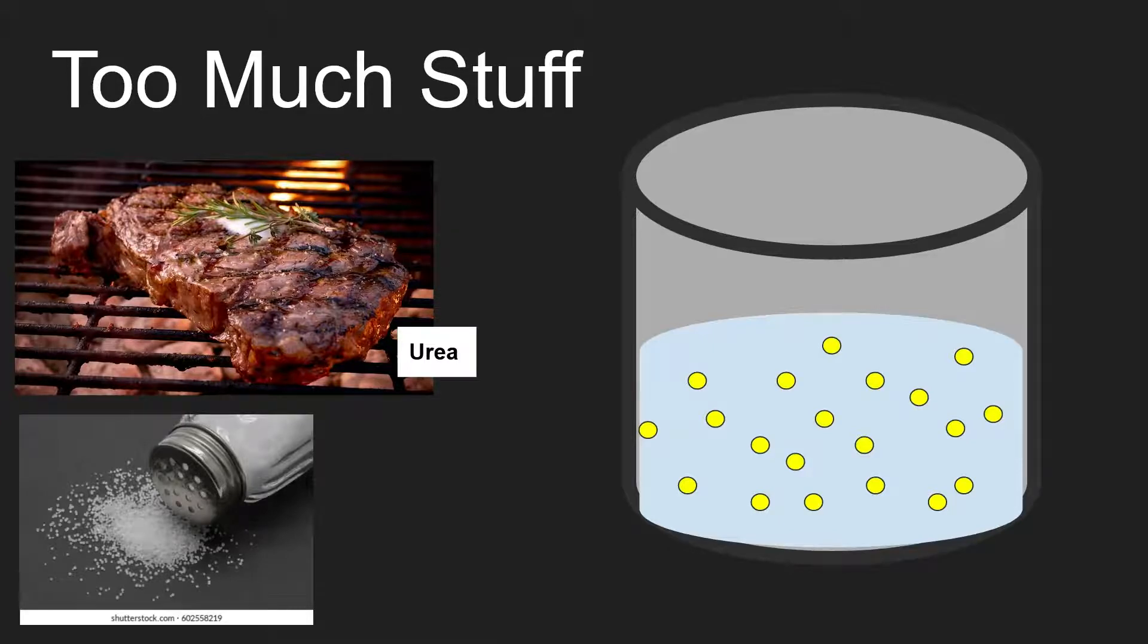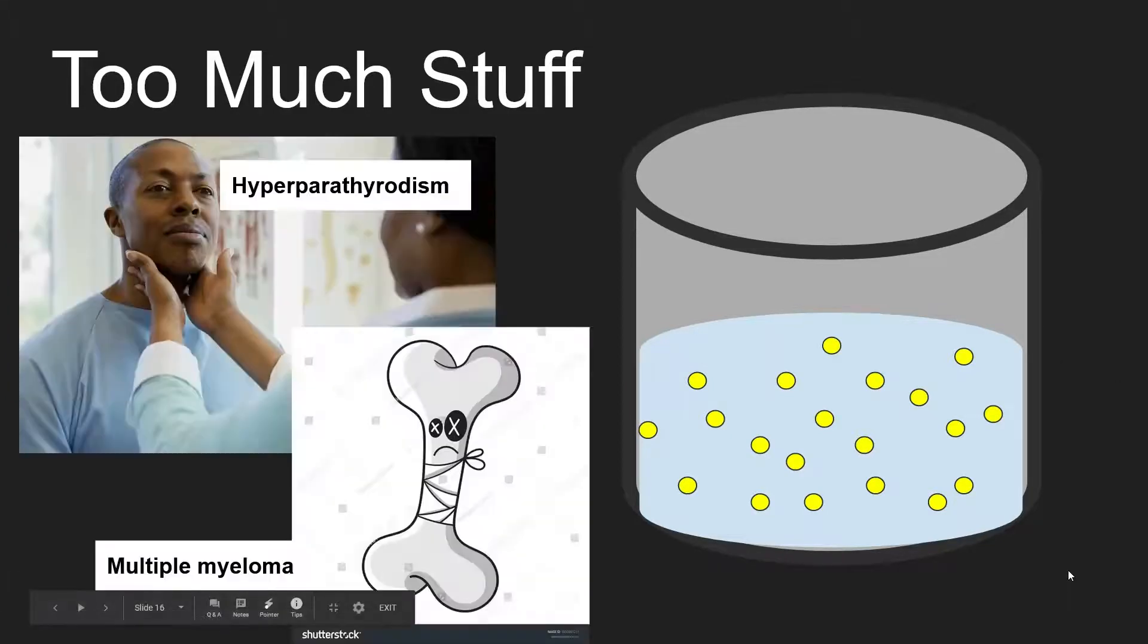Like urea, salt is removed from the body by the kidney. There are diseases that increase the amount of substances in the body that are filtered out by the kidney. One example is hyperparathyroidism, which increases the amount of calcium in the blood that will later be filtered by the kidney.